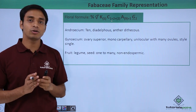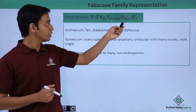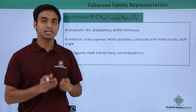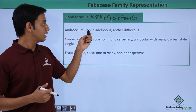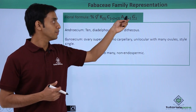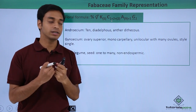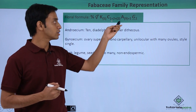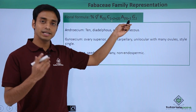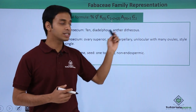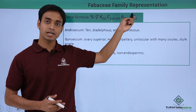Now let's talk about the androecium, or the male reproductive part, represented by 'A'. It is nine plus one, meaning ten stamens. They are diadelphous — nine are in fused form and one is free, forming two bundles. The anthers are dithecous and the arrangement is diadelphous.